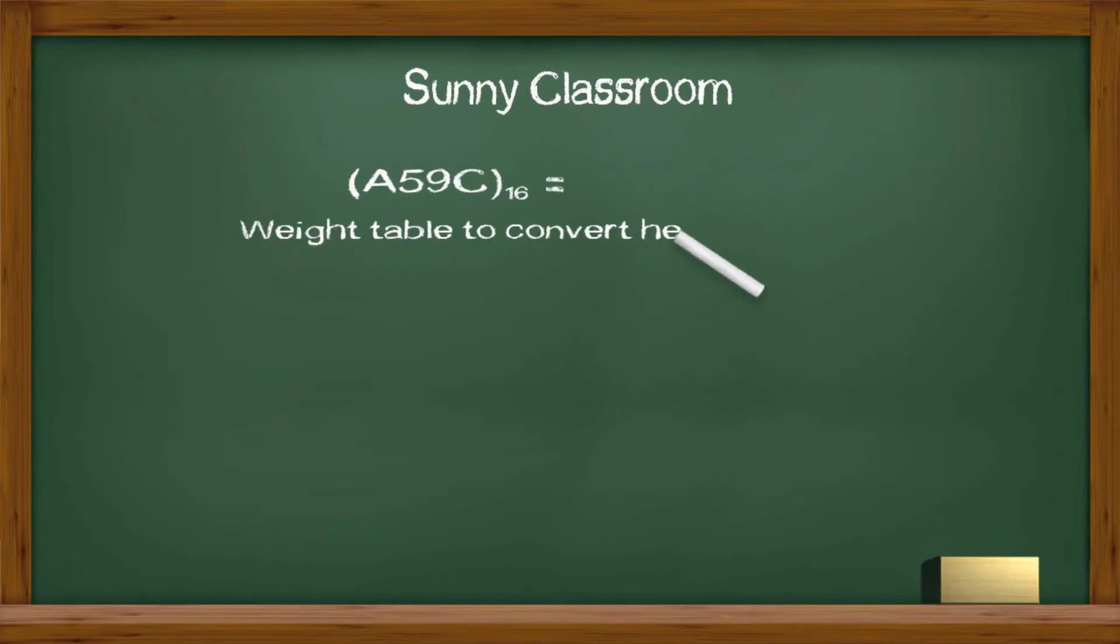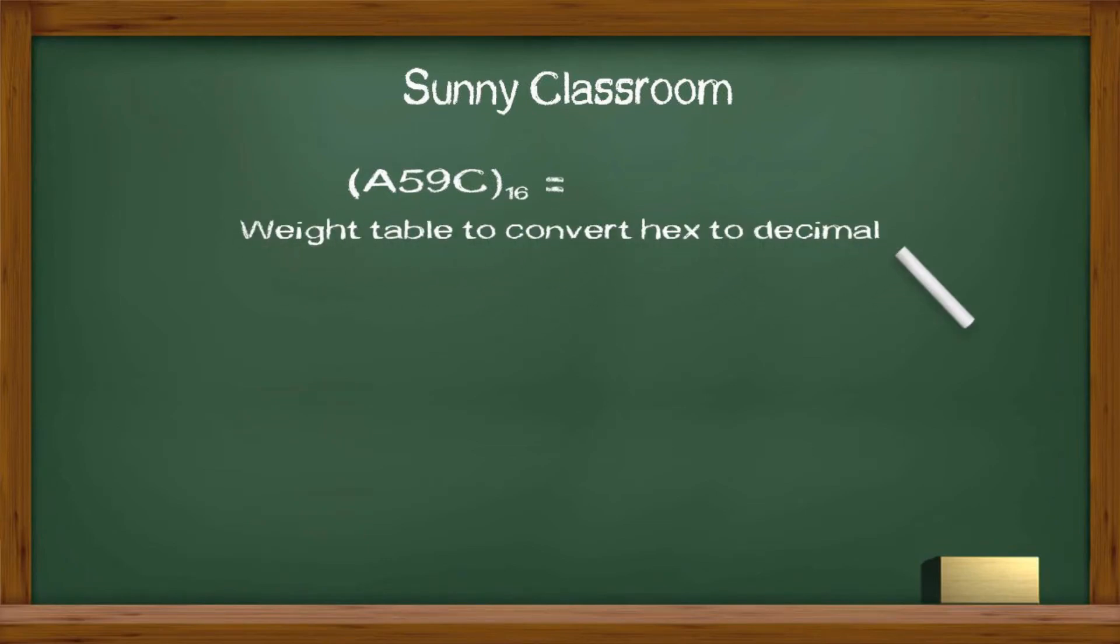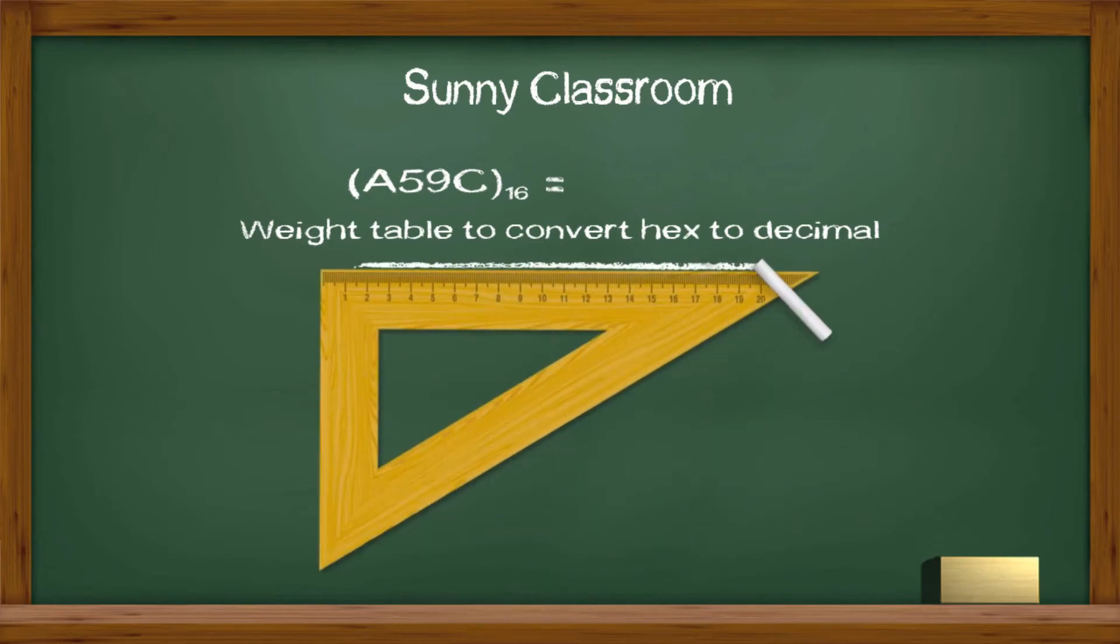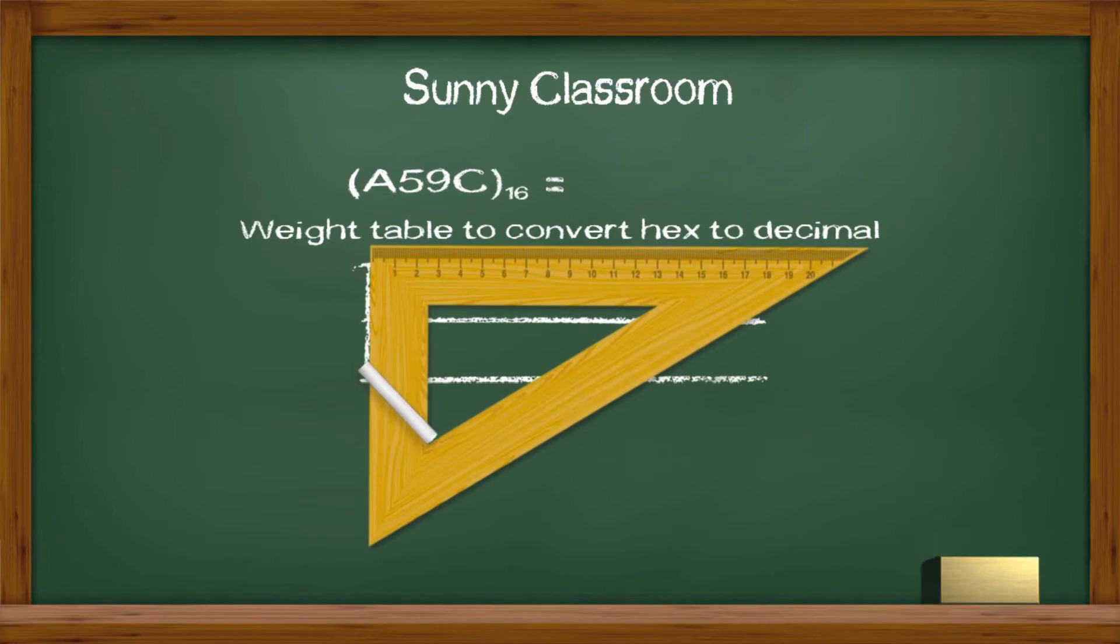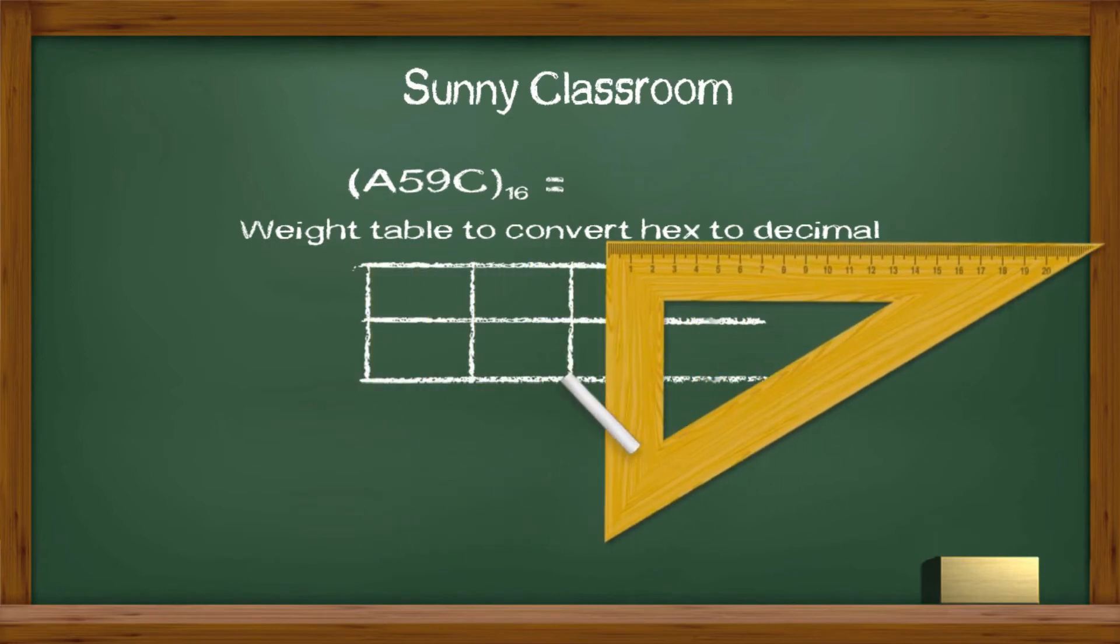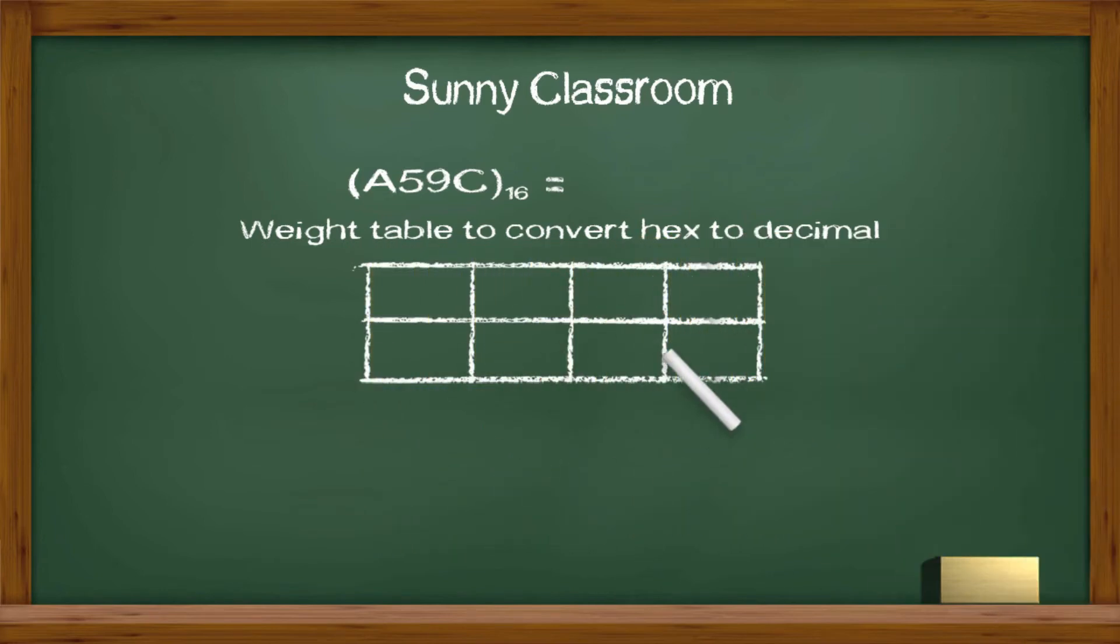We draw the weight table. Four columns are enough. If you convert 5-digit hex, you need 5 columns. If you convert 6-digit hex to decimal, you need 6 columns.